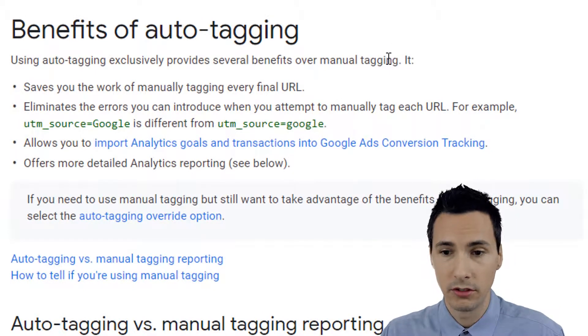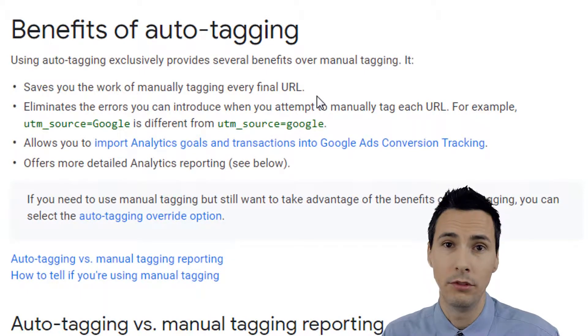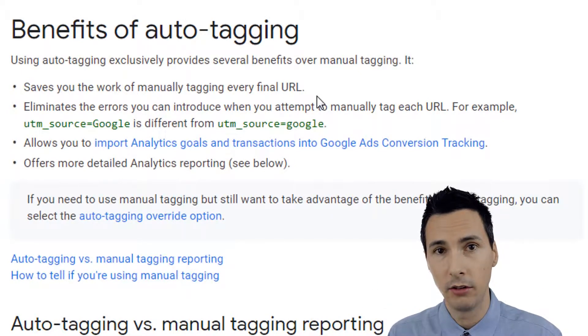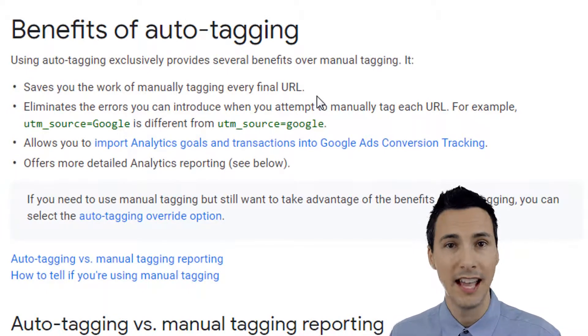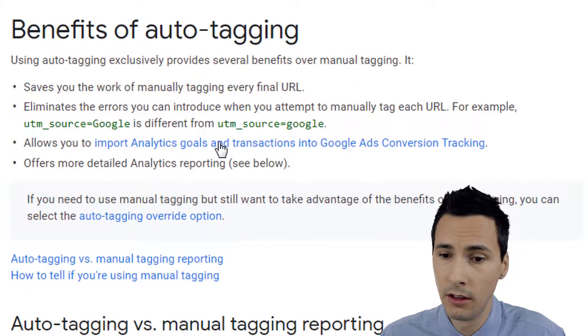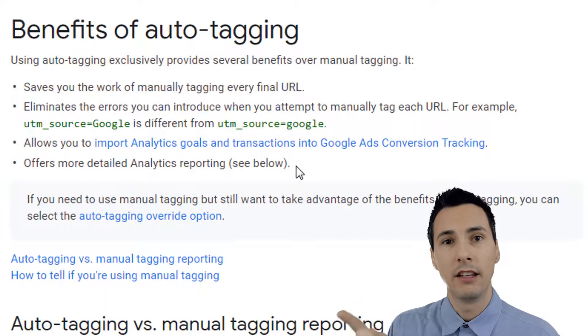There are a lot of benefits to using auto tagging versus manual tagging. Your options are to manually tag your URLs or use auto tagging. I've seen so many times where people are manually tagging and they don't do it right — it's hard to keep track of all the final URLs in your account. Especially when using Google Ads Editor for bulk changes, one simple mistake could absolutely break your tracking. The main benefit of auto tagging is you get more information back into Google Analytics.